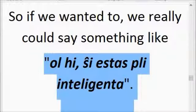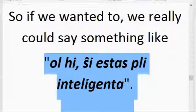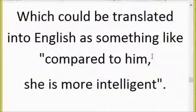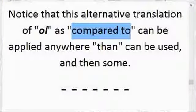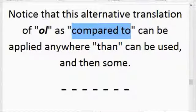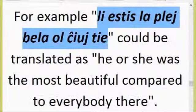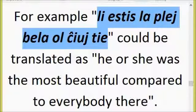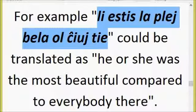If we wanted to, we could say something like 'Ol li, ŝi estas pli inteligenta,' which could be translated as 'Compared to him, she is more intelligent.' This alternative translation of 'ol' as 'compared to' can be applied anywhere 'than' can be used — and then some. For example, 'Li estis la plej bela ol ĉiuj tie' could be translated as 'He was the most beautiful compared to everybody there.'